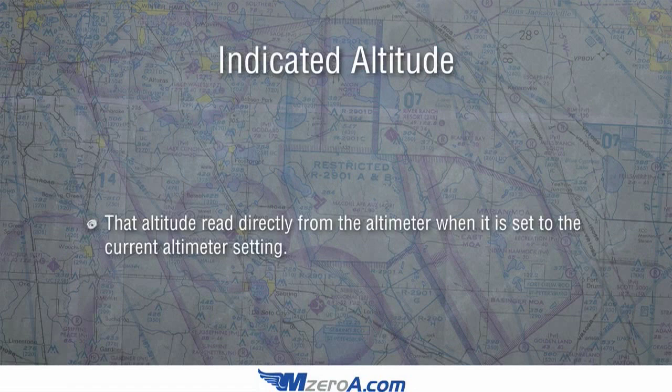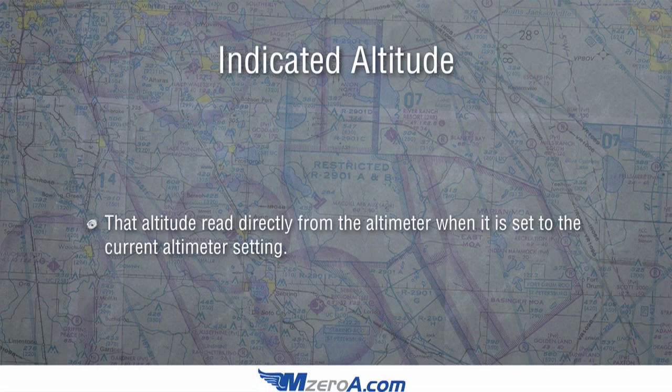Alright, so we're starting out with the most basic one — indicated altitude — what you read right off your altimeter. The current altitude from the altimeter when it's set to the current altimeter setting. Doesn't get any easier than that.